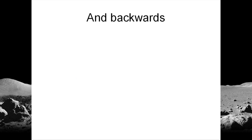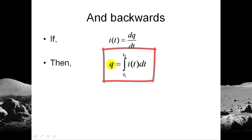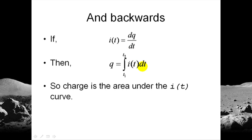This works backwards too. If the current is the derivative of q with respect to time, we can integrate that equation on both sides and get that the integral of i(t) is equal to the charge. Like this. The charge that flows through the checkpoint between t1 and t2 is the integral of i dt. Graphically, the charge that flows through the checkpoint between t1 and t2 is the area under the i(t) curve. This area.